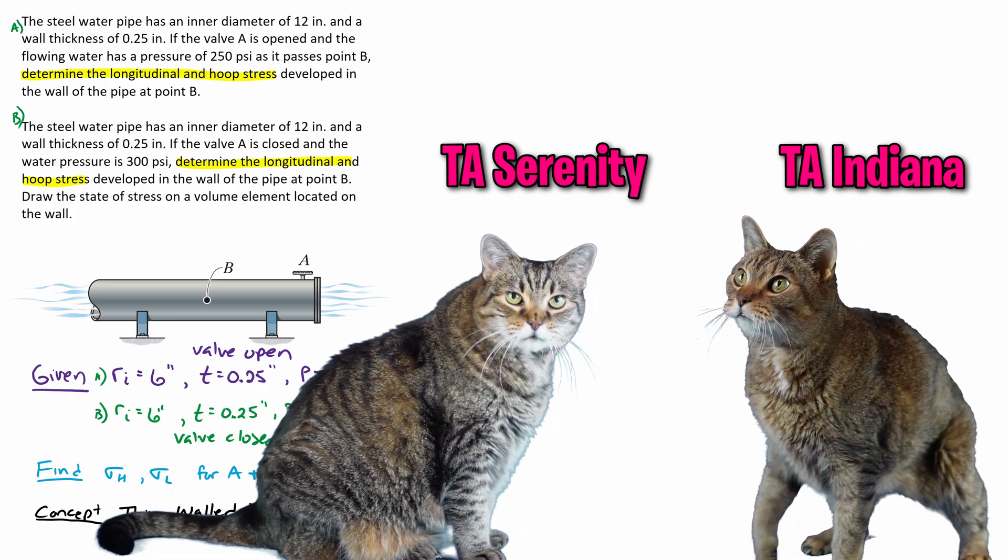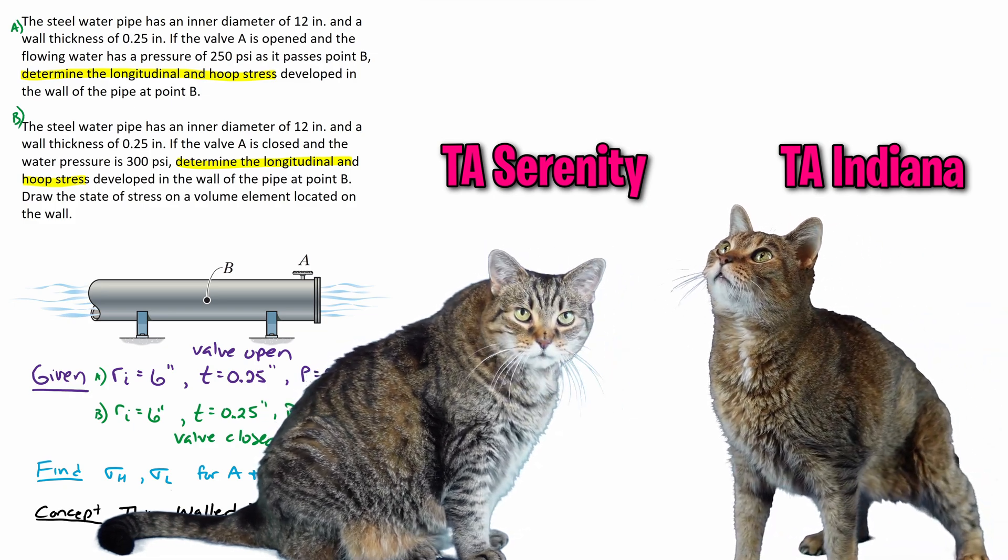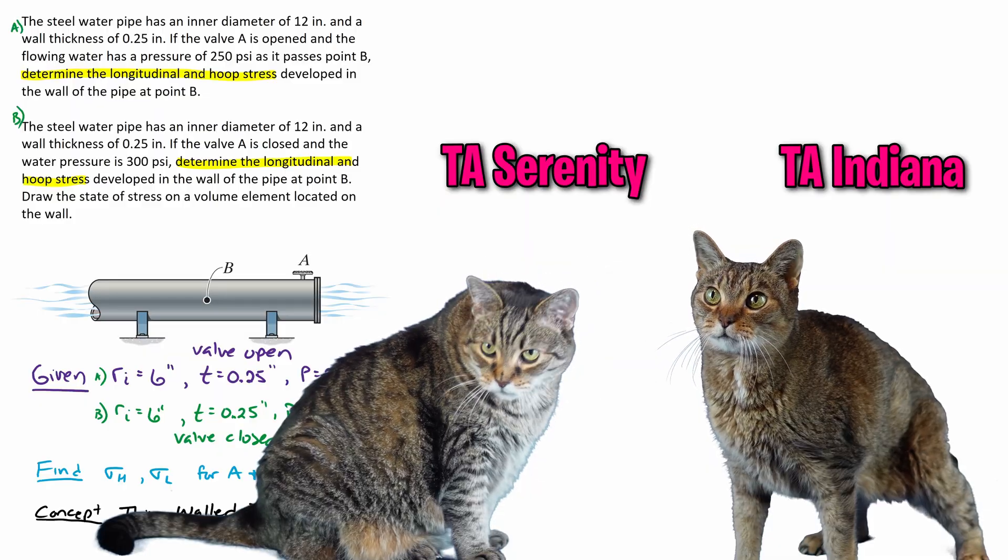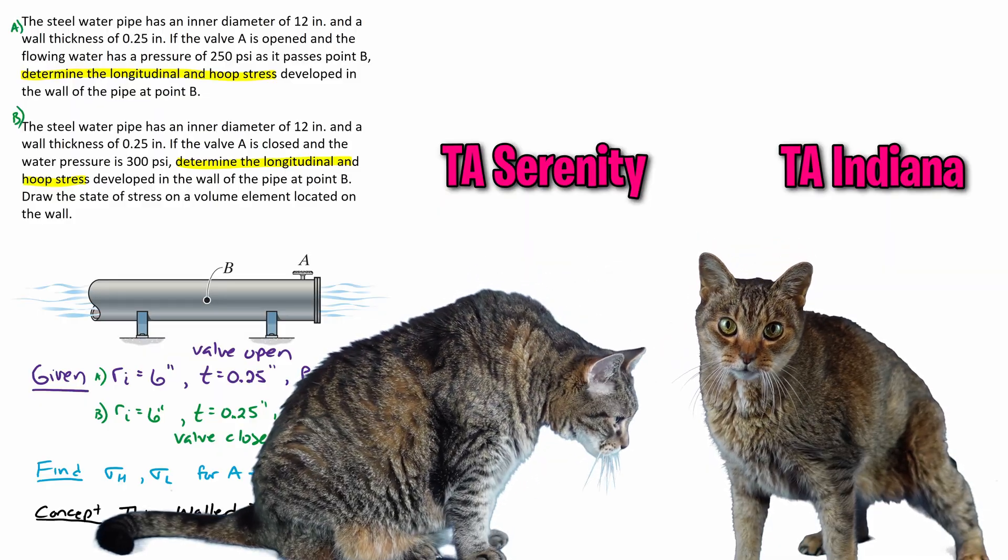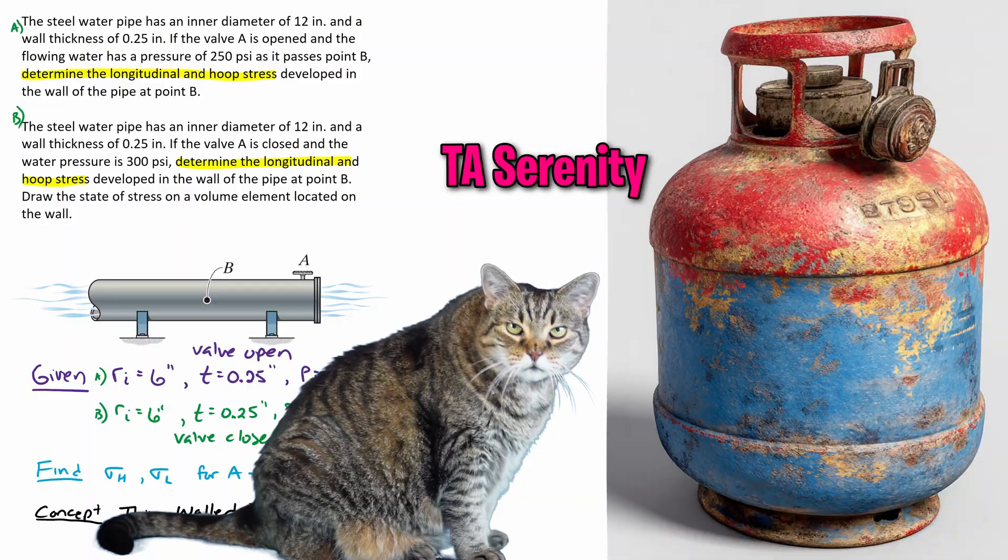When you think of thin-walled pressure vessels, think of your TA Serenity. Aw, because I'm so thin? No, because you're shaped like a propane tank.